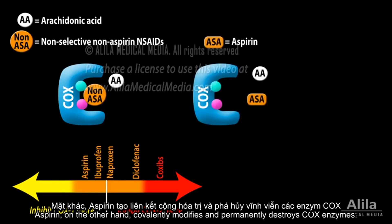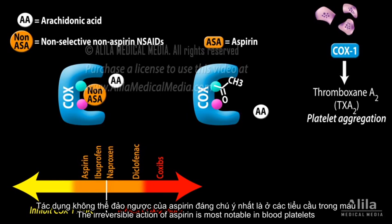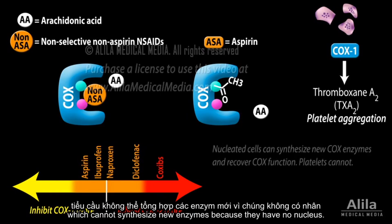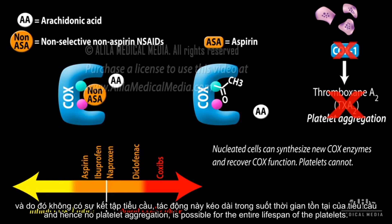Aspirin, on the other hand, covalently modifies and permanently destroys COX enzymes. The irreversible action of aspirin is most notable in blood platelets, which cannot synthesize new enzymes because they have no nucleus. Once the enzyme is inactivated by aspirin, no production of TXA2, and hence no platelet aggregation, is possible for the entire lifespan of the platelets.